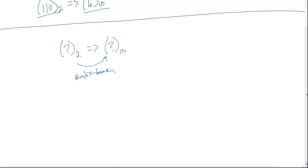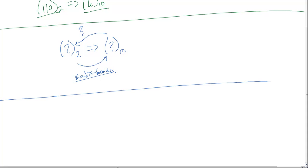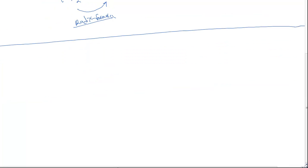Let's say, however, that we want to convert a base 10 number into base 2. How do we do that? There exist some methods that work to create this bridge. So the first method we're going to learn about is the divide by 2 method.